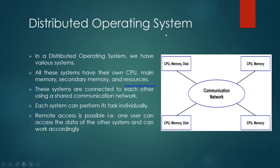In a distributed operating system, we have various systems and all these systems have their own CPU, main memory, secondary memory, and other resources. These systems are connected to each other using a shared communication network. Each system can perform its individual task individually. The best part about the distributed operating system is remote access — one user can access the data of another system and can work accordingly.